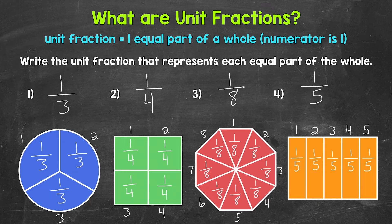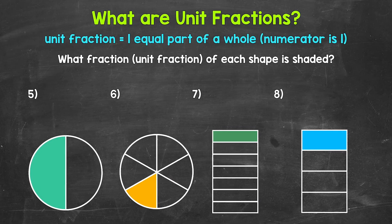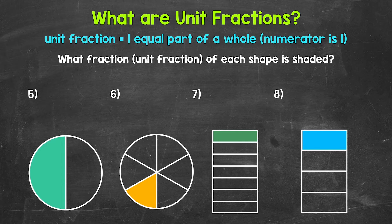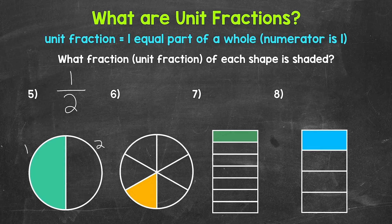Let's move on to numbers five through eight. For these, we're going to write what fraction — and these will all be unit fractions — of each shape is shaded. Starting with number five: the whole circle has been divided into two equal parts — one, two. So our denominator is two. One of the two equal parts is shaded, so our numerator is one. Our unit fraction is one-half.